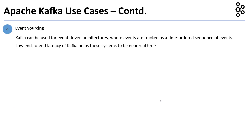Four, Kafka can be used for event sourcing use cases. Kafka can be used for event-driven architectures where events are tracked as a real-time order sequence of events. Low end-to-end latency of Kafka helps these systems to be near real-time.